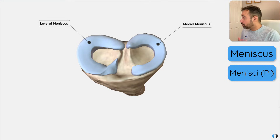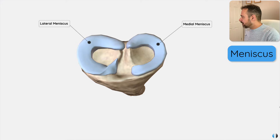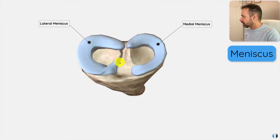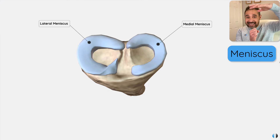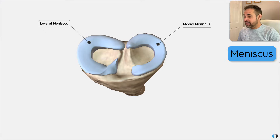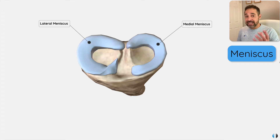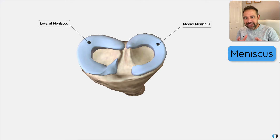Next, over to the meniscus — or menisci if you're talking about more than one. The meniscus is a cartilaginous crescent-shaped structure that sits on the tibial plateau. We have one on the lateral side, the lateral meniscus, and one on the medial side, the medial meniscus. The main role of this structure is in shock absorption, particularly downward or axial movement and also rotational movement. The meniscus has far less of a blood supply than the ACL, so in the majority of meniscal injuries, we don't expect that sudden onset of swelling that we may see with ACL injuries.